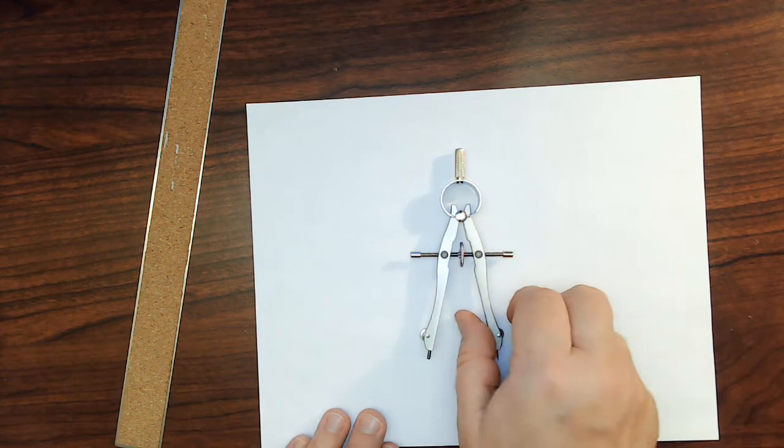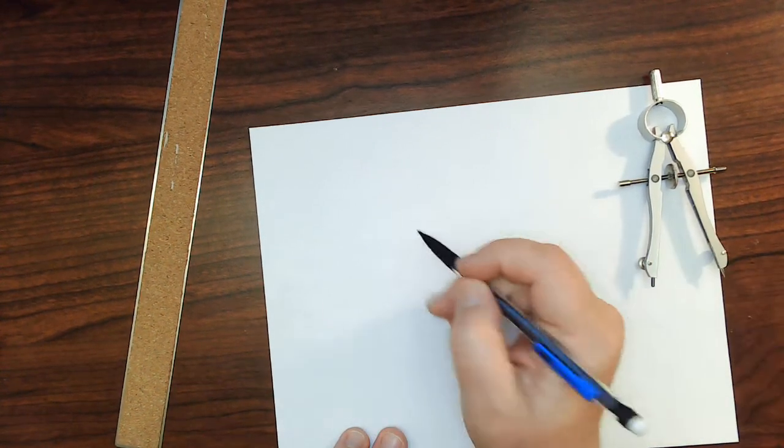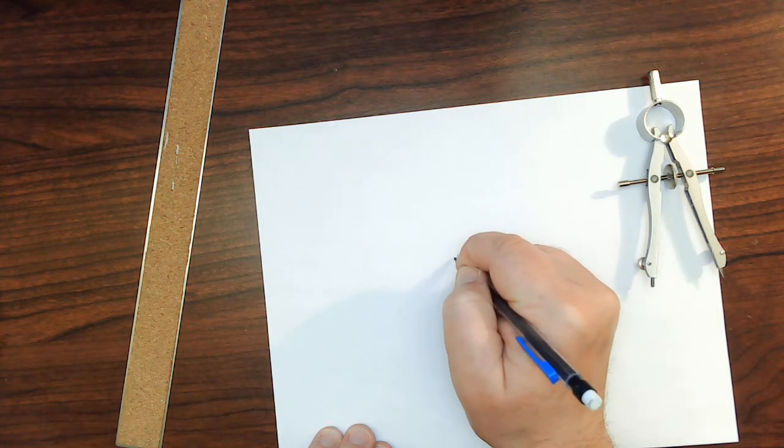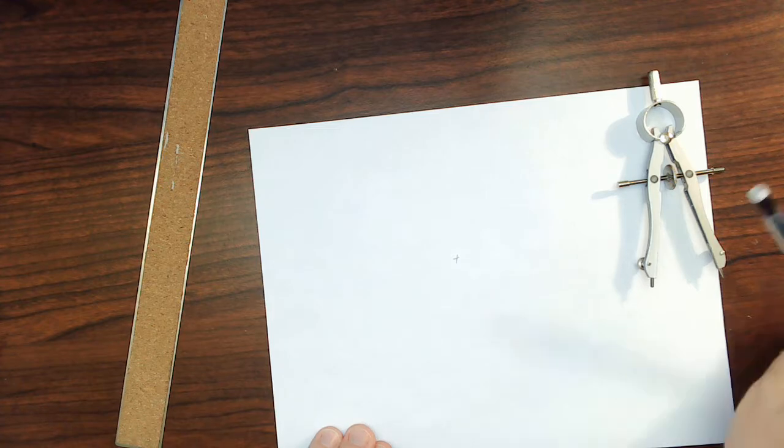I'm going to make a circle, a diameter, and a perpendicular bisector to the diameter using a bow compass.